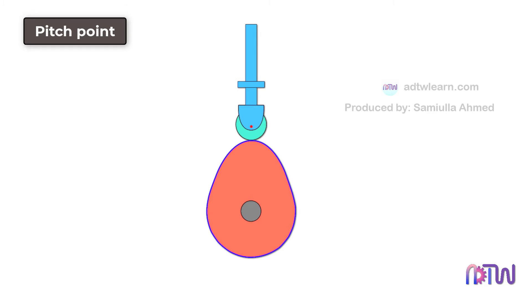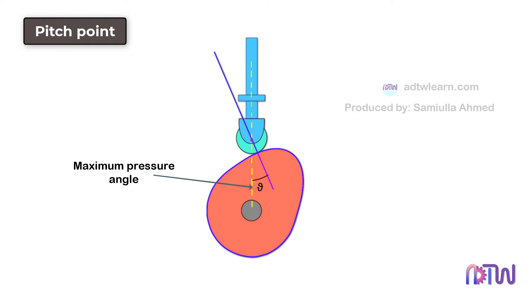Pitch Point: As we saw, each point on the cam surface has a different pressure angle, and its magnitude at all the instances of the follower motion will be changing. Therefore there will be a point where the magnitude of the pressure angle is maximum. A pitch point is a point corresponding to this maximum pressure angle.